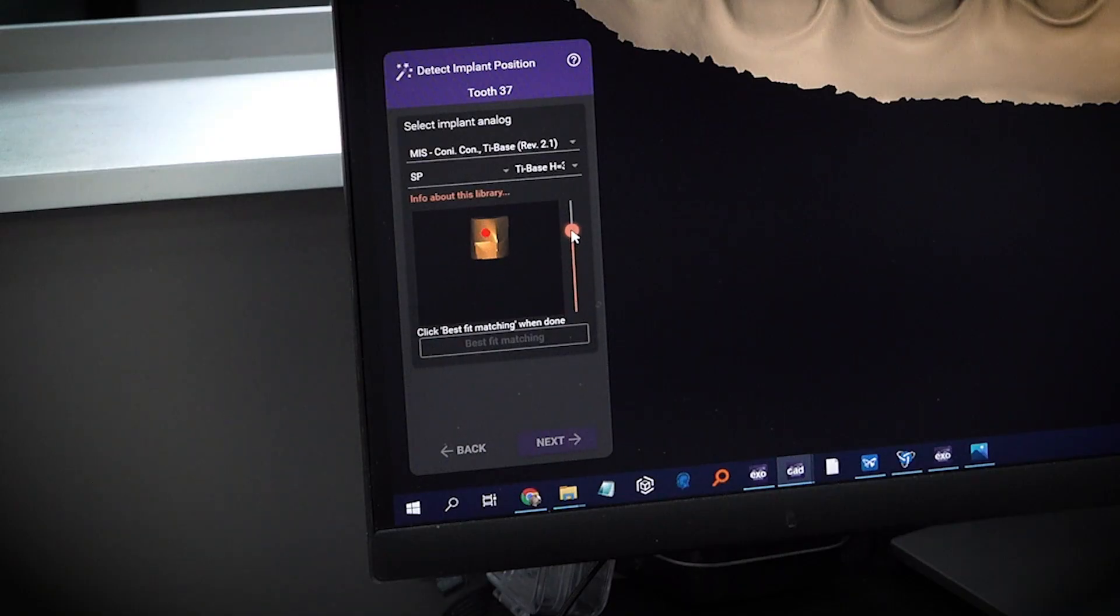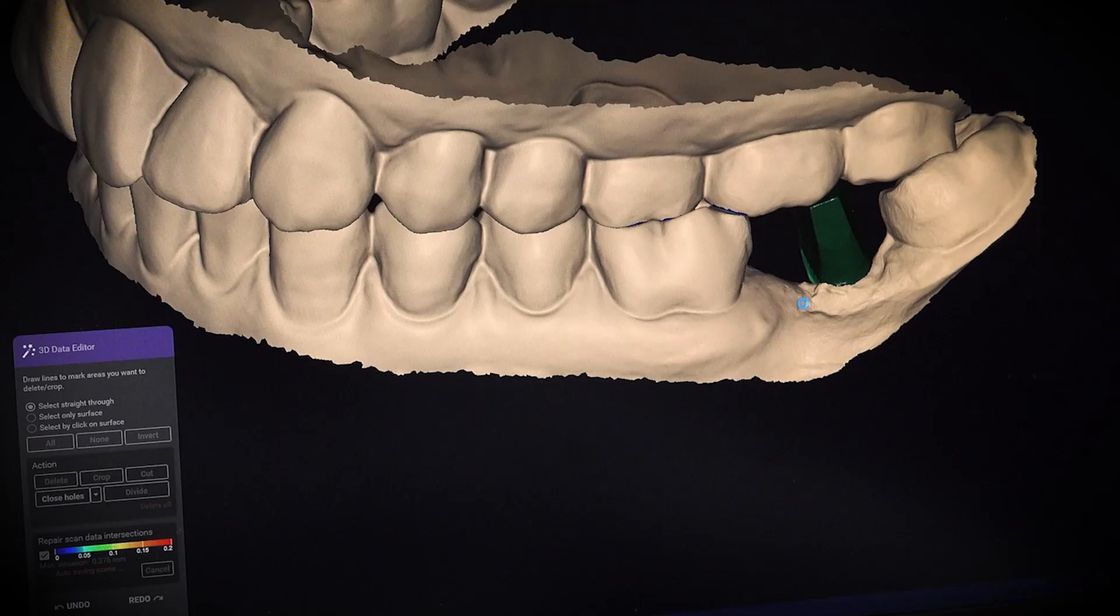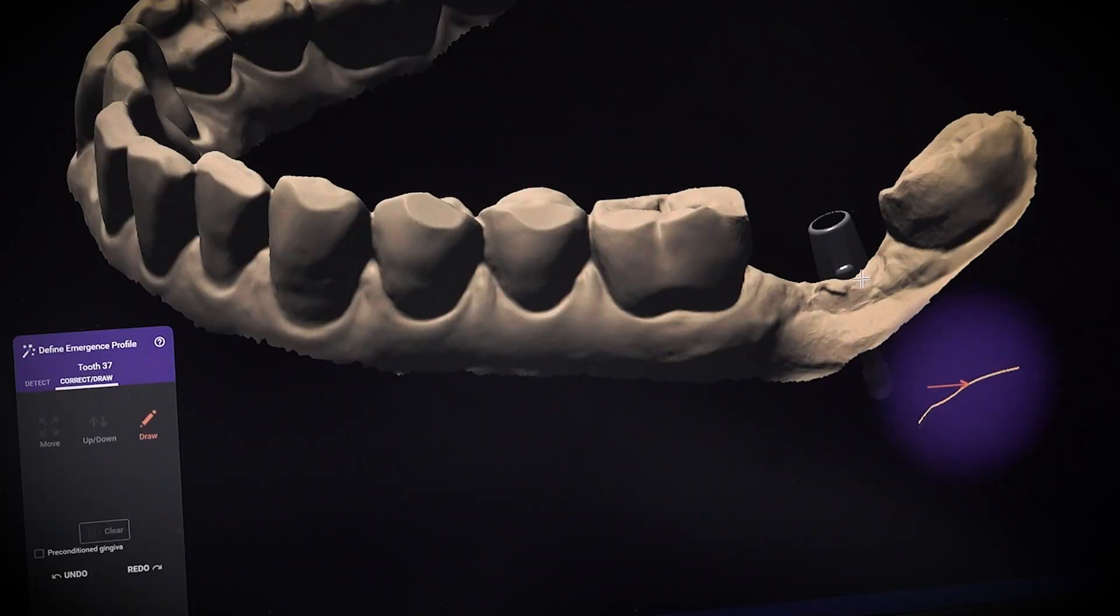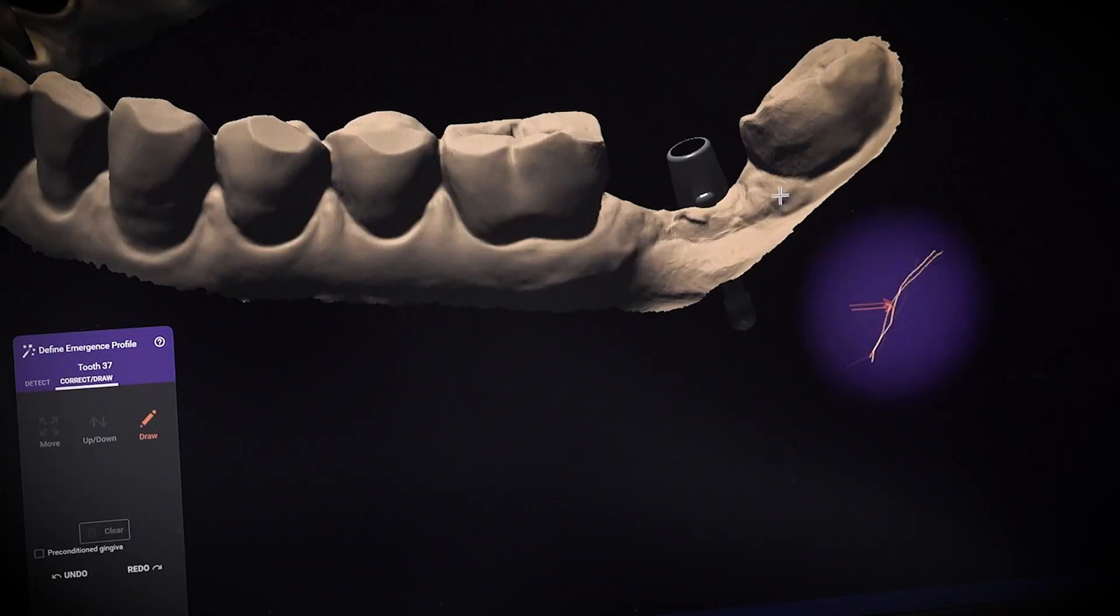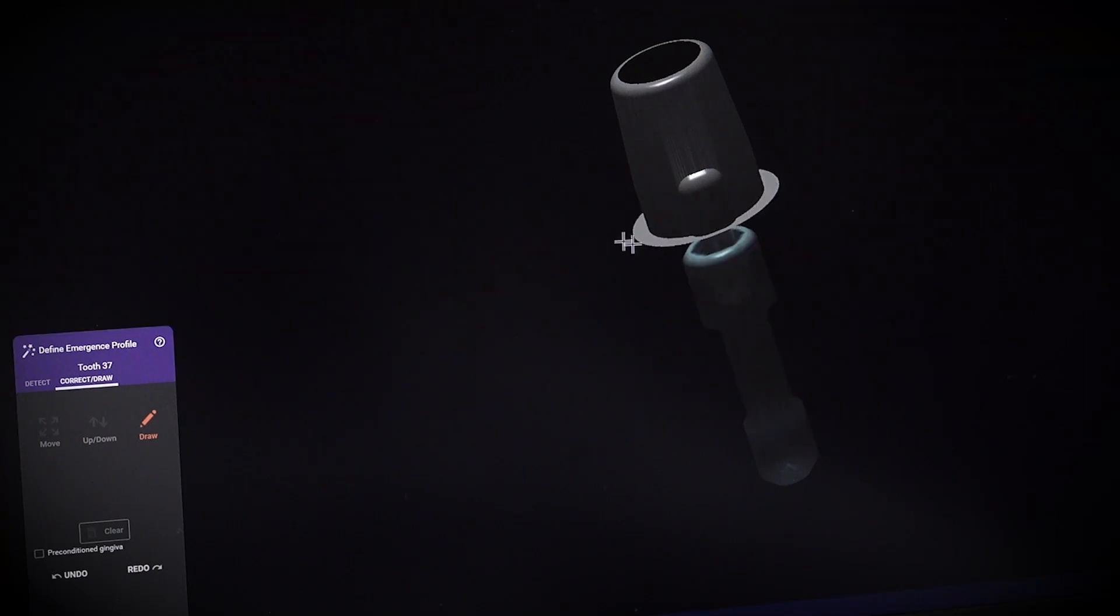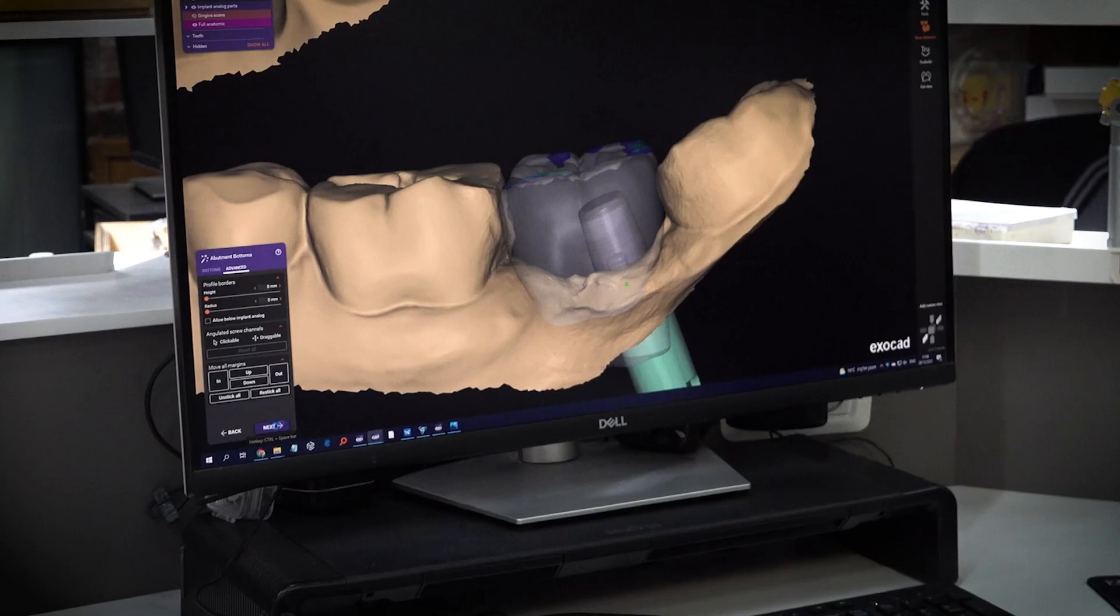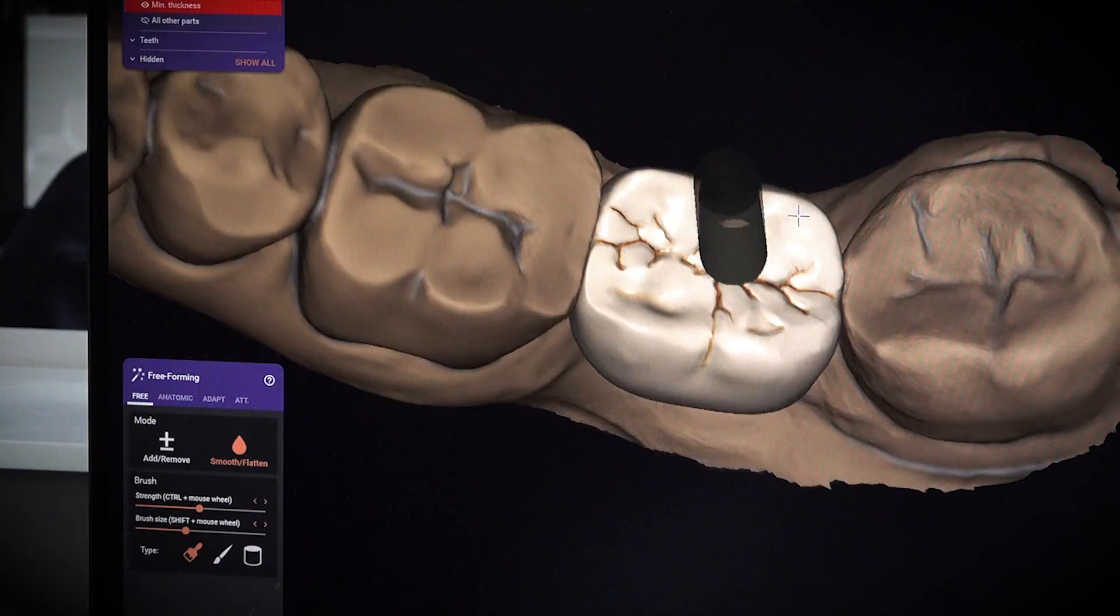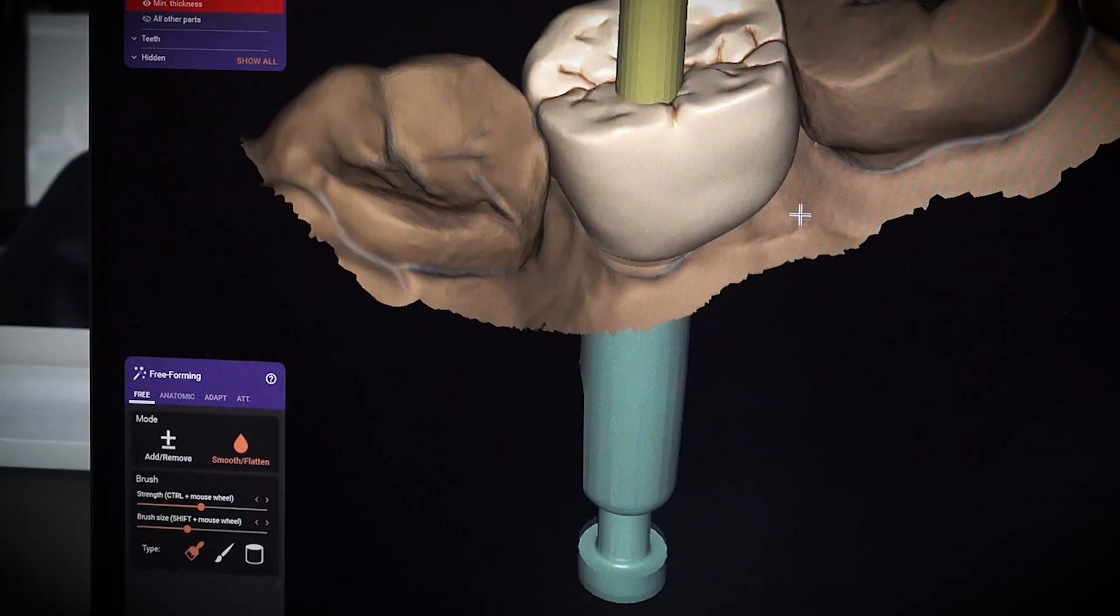Align the scan post in the scan file to the tie base frame shown in the library. The software will automatically perform the best alignment. Once the match is approved, the chosen tie base shell will be shown on the exact position of the scan post. Now we can start the design of the crown.